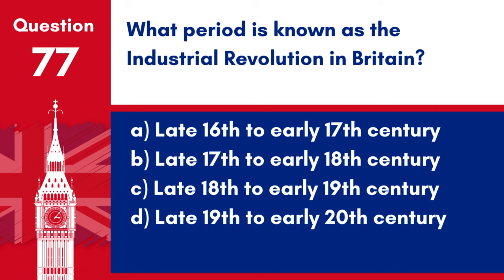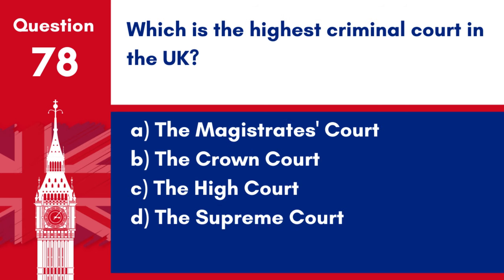Question 77. What period is known as the Industrial Revolution in Britain? a. Late 16th to early 17th century. b. Late 17th to early 18th century. c. Late 18th to early 19th century. d. Late 19th to early 20th century. Answer: c. Late 18th to early 19th century. The Industrial Revolution in Britain occurred from the late 18th to early 19th century, marked by significant advancements in manufacturing and technology.